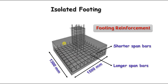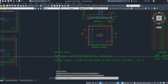Shorter span bars are parallel to the shorter span, and longer span bars are parallel to the longer span. When calculating the number of bars in the shorter span, you count along the longer dimension. While calculating the length of the bar, you take the shorter span dimension. Similarly, for the longer direction bars, count along the shorter dimension and take the longer span dimension for the bar length. Now let us start with the calculation.